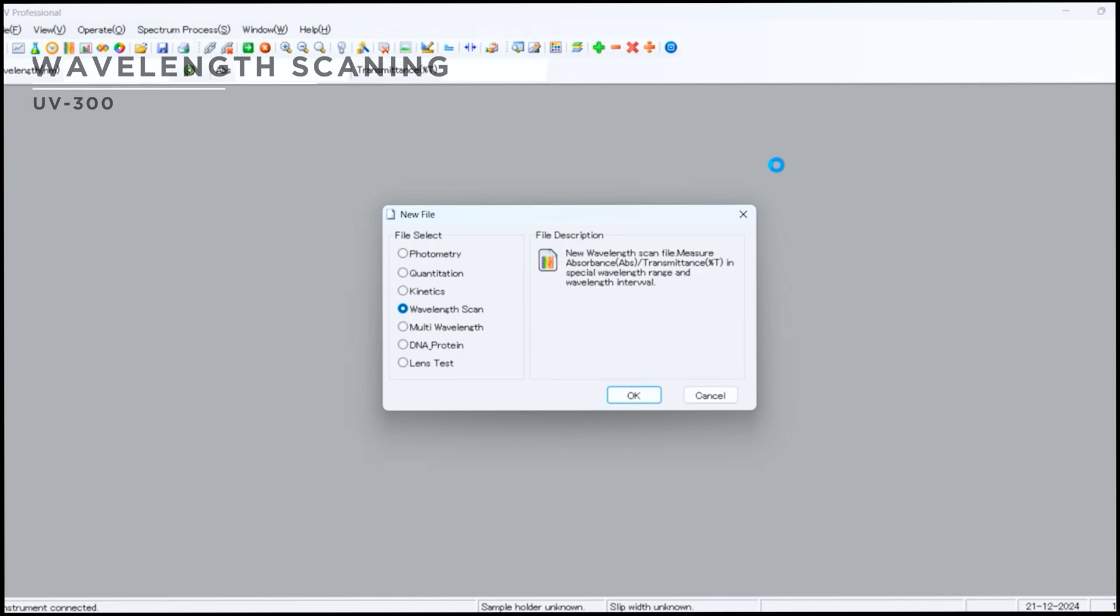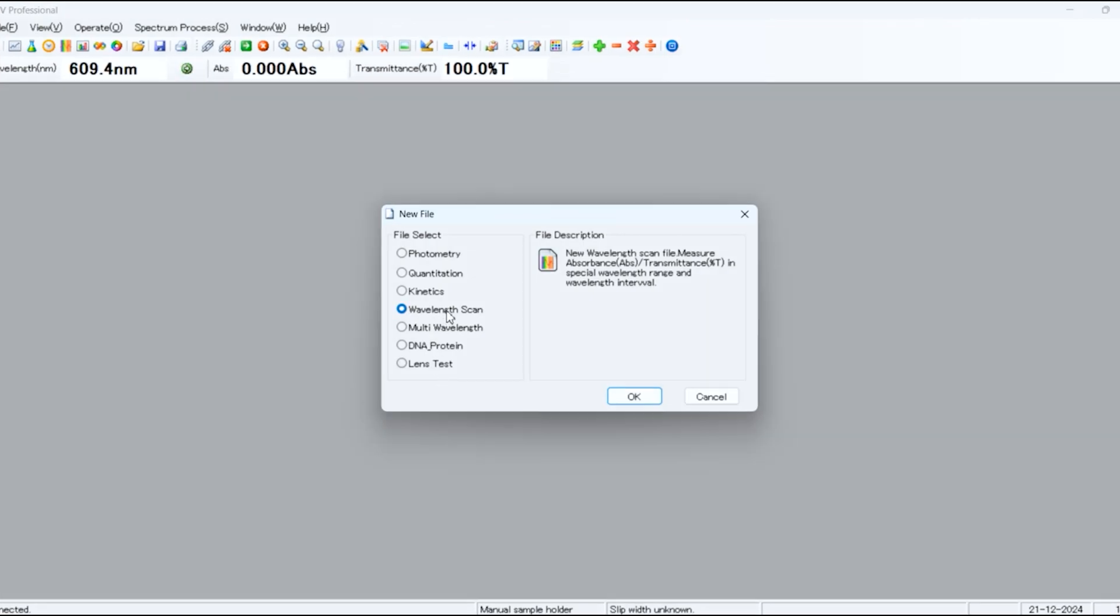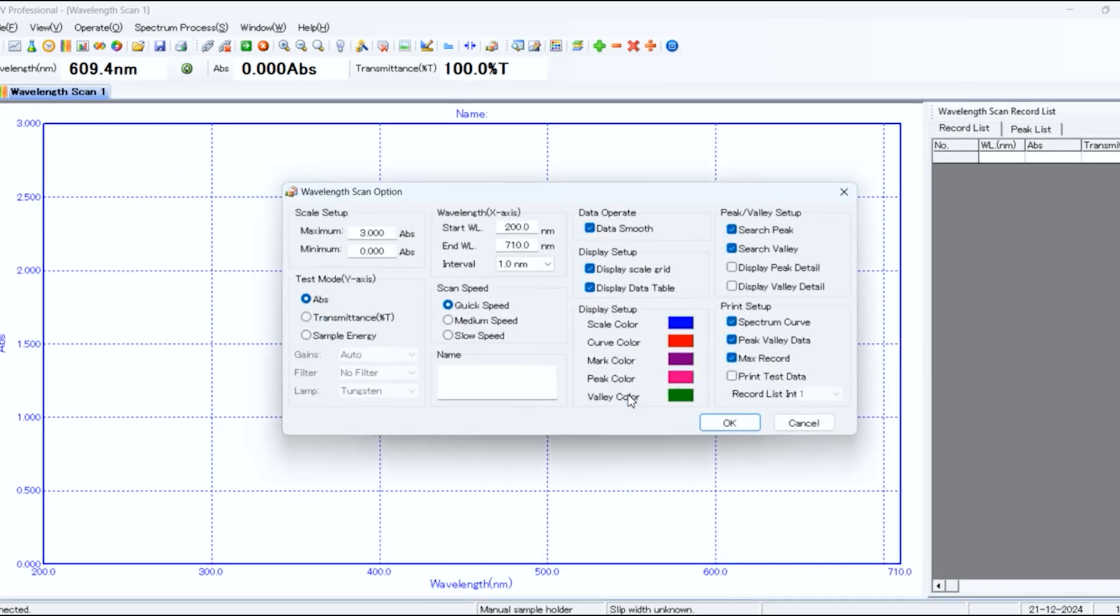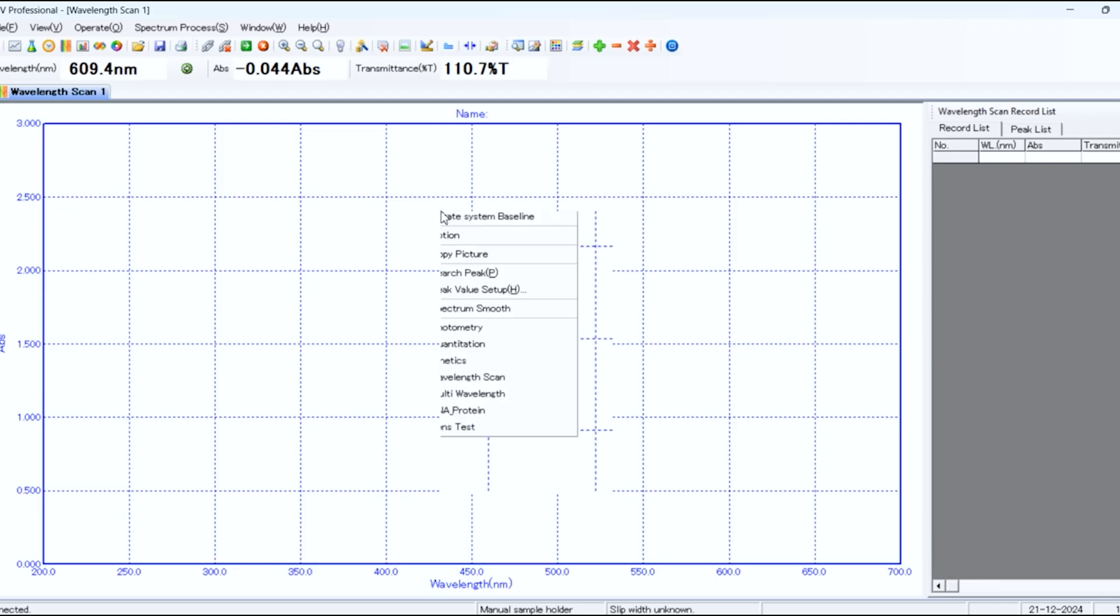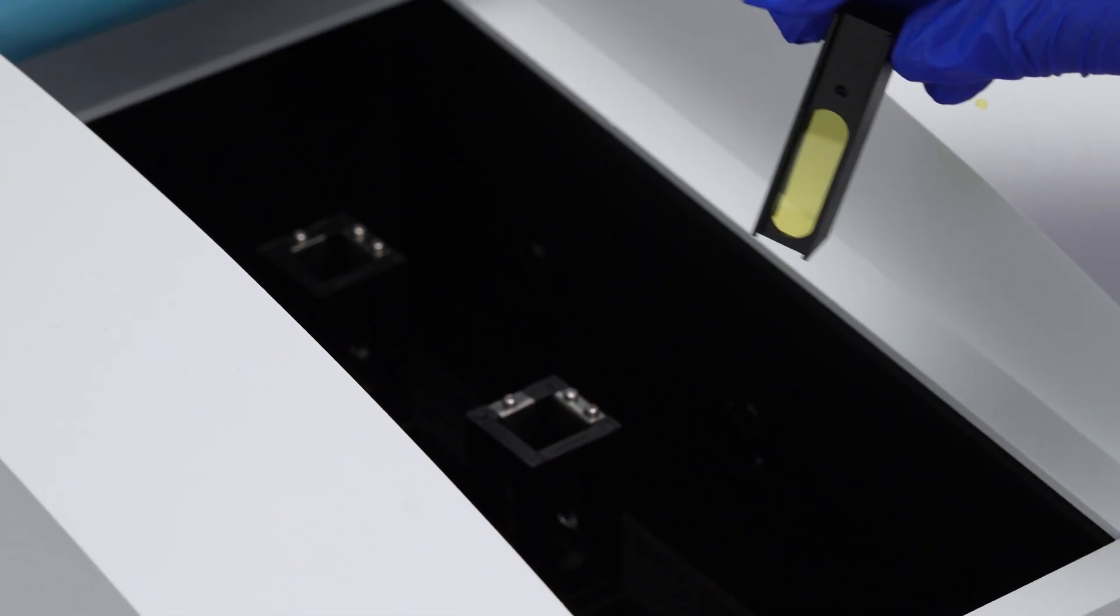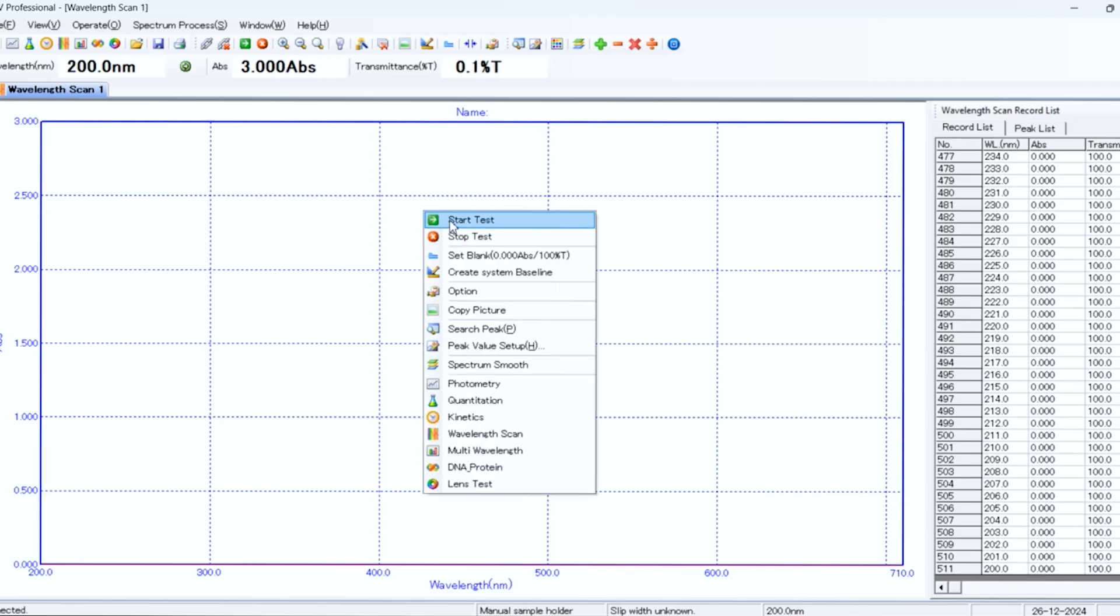Wavelength scanning measures unknown sample wavelengths. Select wavelength scan and click OK. Input the start wavelength, end wavelength, interval, scan speed and file name. Press OK. Place a blank solution in the light source. Right-click and select set blank to measure absorbance for your samples. Insert the sample such as a Holmium filter and click start test to plot the graph.